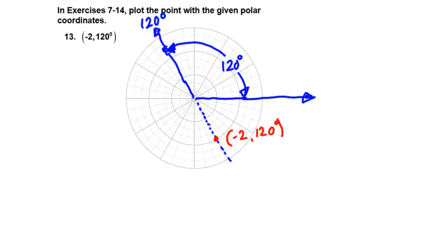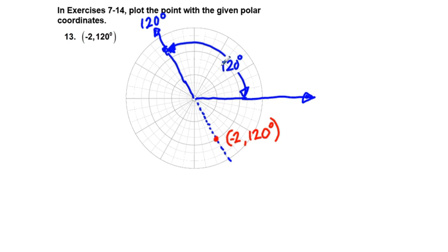These exercises are pretty easy except for the concept of a negative radius. A negative radius takes the coordinate pair in the opposite direction from where the terminal side of the angle points — in other words, 120 degrees plus 180 gives 300 degrees. That's where this point actually finds itself in standard position. Good luck on all your even-numbered problems and thanks for viewing.